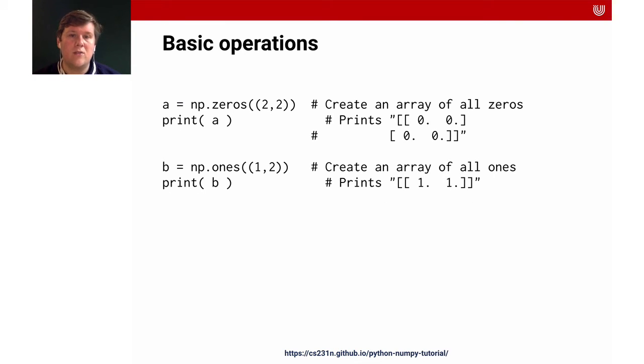Here's some basic operations to initiate arrays that you might need to use. You can do numpy dot zeros and then you give it a tuple of the dimensionality. So if you do numpy dot zeros bracket bracket two comma two you get a 2 by 2 array just with zeros and equivalent to that is numpy dot ones which gives you an array of all ones.